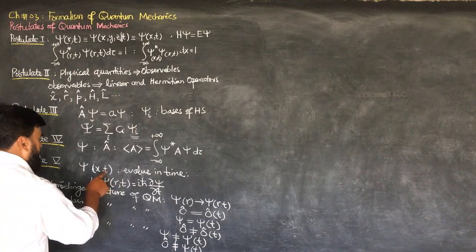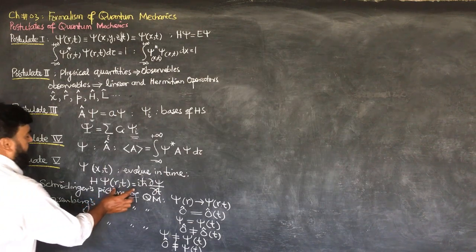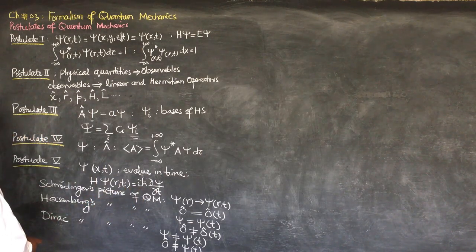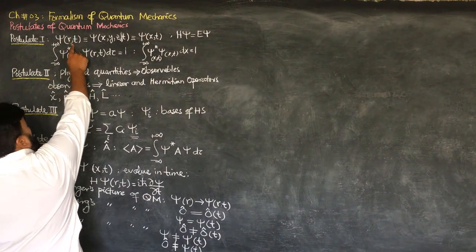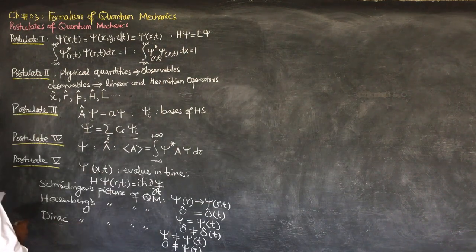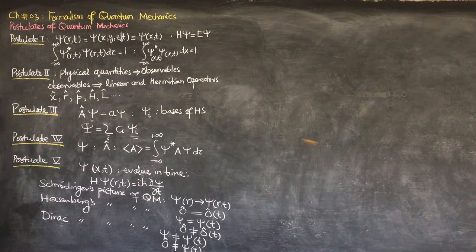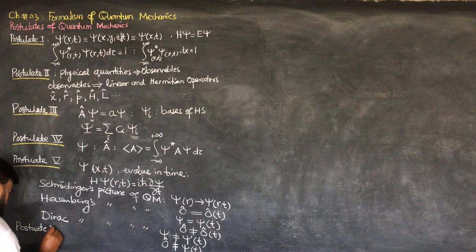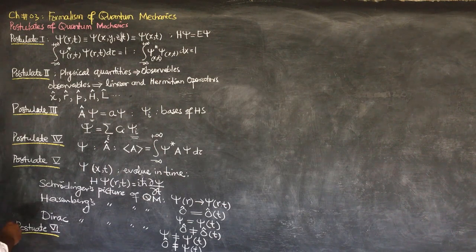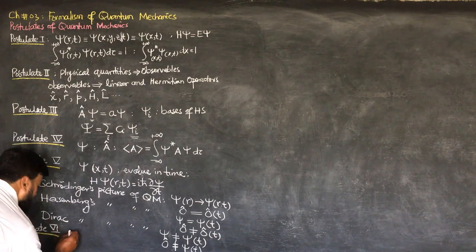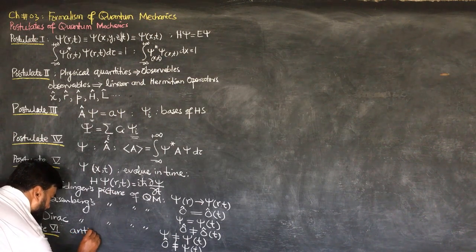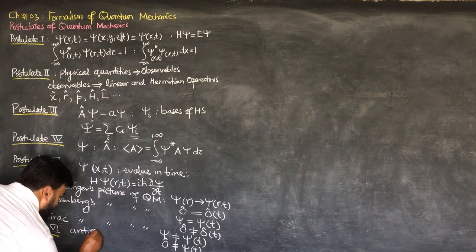Postulate 5 states that the wave function evolves in time and satisfies the time-dependent Schrödinger wave equation, whereas the time-independent wave function satisfies the time-independent Schrödinger wave equation. There is another postulate, Postulate 6, which addresses the anti-symmetry principle — the total wave function remains anti-symmetric.